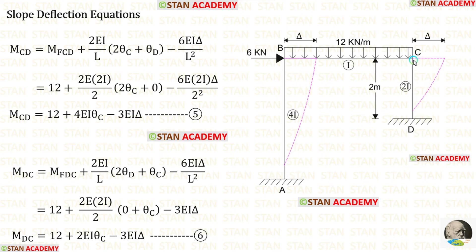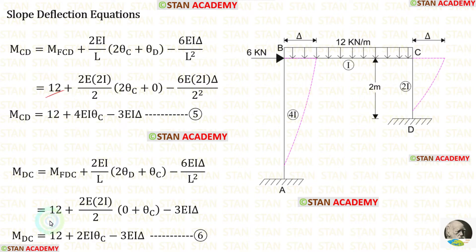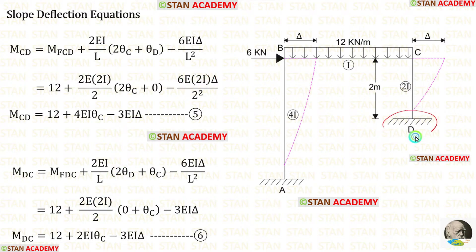Now let us make the slope deflection equations for column CD. Since column CD is subjected to sway, we add the sway moment terms to the equations and apply the fixed end moments. The length of column CD is 2 meters, and the moment of inertia is 2i, so instead of I we apply 2i. At point D there is a fixed support, so theta D equals 0. In this way, we have made two equations for column CD.